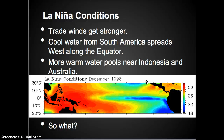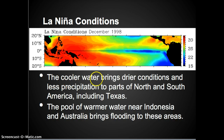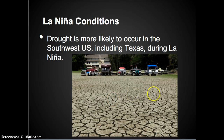Now let's look at the La Niña conditions. In La Niña, the trade winds get stronger. We have cool water from South America that spreads west along the equator. We have more warm water that pools near Indonesia and Australia. The cooler water brings drier conditions and less precipitation to parts of North and South America, including Texas. The pool of warmer water near Indonesia and Australia brings flooding to these areas. Drought is more likely to occur in the southwest United States, including Texas, during La Niña.